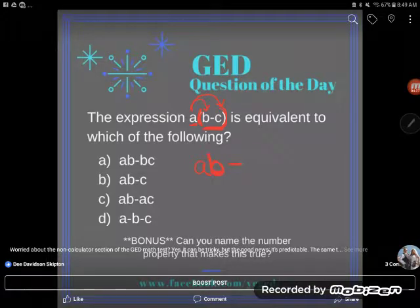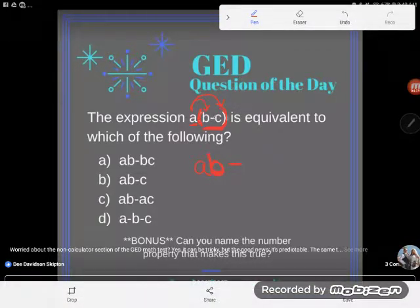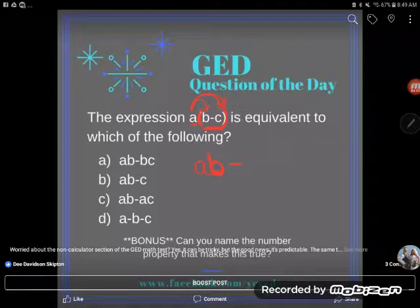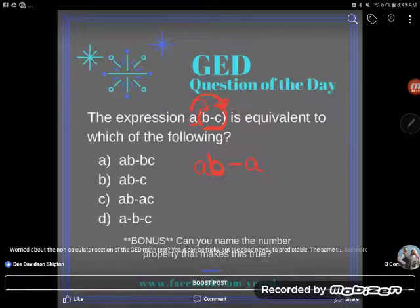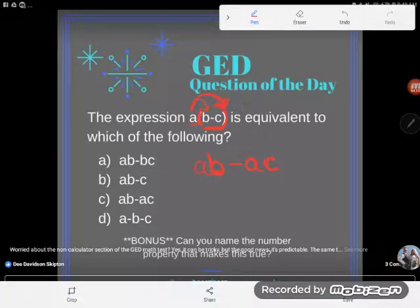Now, my minus is going to stay here. It's still a subtraction problem, but I'm not just going to write the c. I have got to pass this a out here. So a times c is ac. And that's this idea that multiplication passes out over parenthesis.